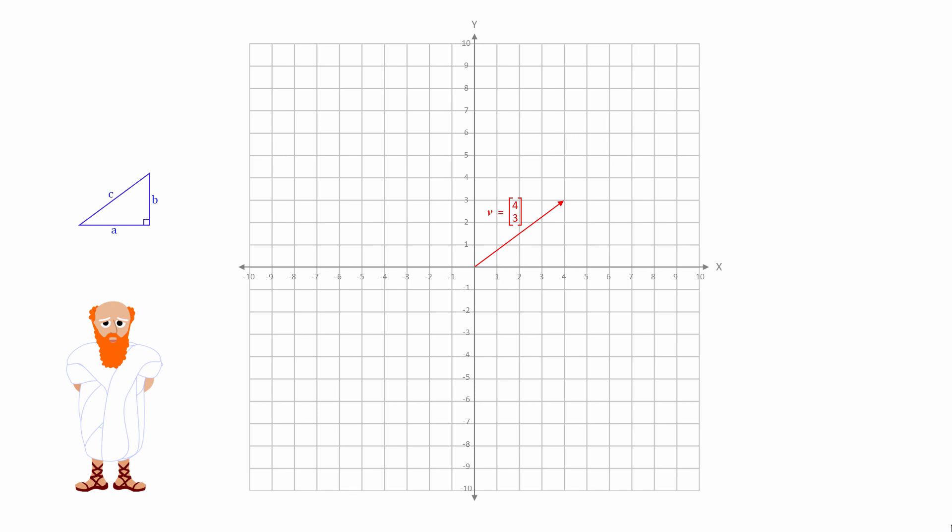where C is the longest side, the so-called hypotenuse, A squared plus B squared is equal to C squared.